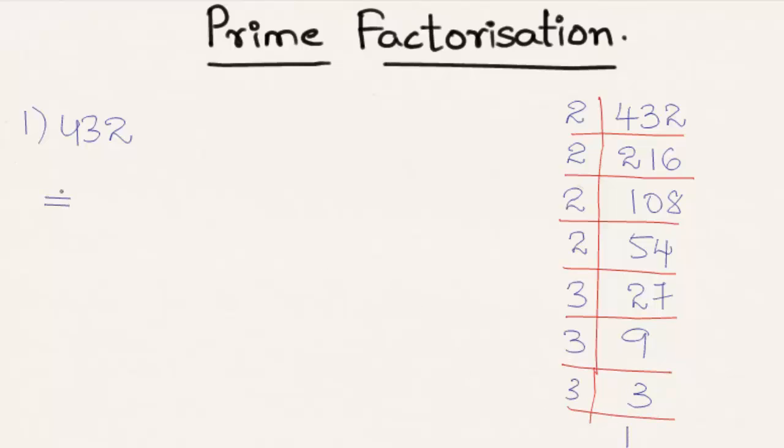So we can write this as 2 multiplies itself 4 times and now again 3 multiplies itself 3 times into 1, which is nothing but 2 raised to the power 4 into 3 raised to the power 3 into 1.